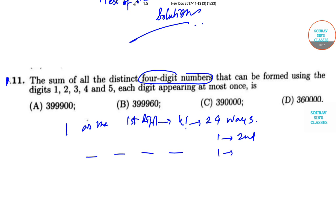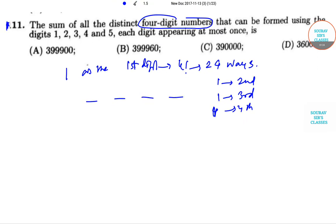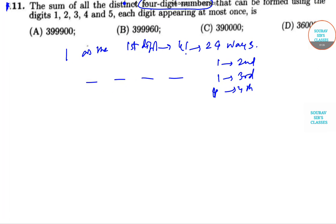Therefore, applying the basic formula of permutation, we apply 24 ways in each place. So 1, 2, 3, 4, and 5 for the first place, similarly for the second place 1 plus 2 plus 3 plus 4 plus 5.